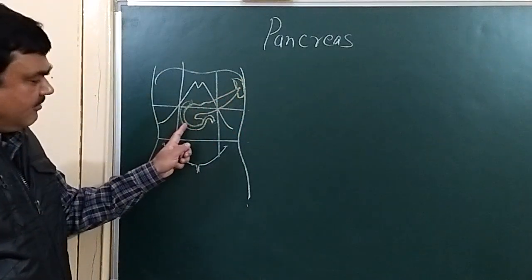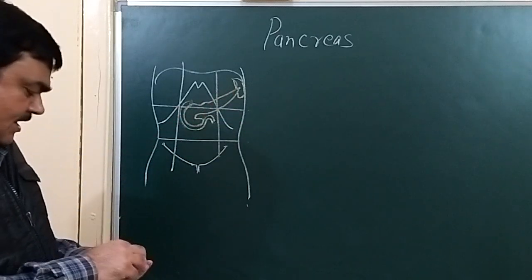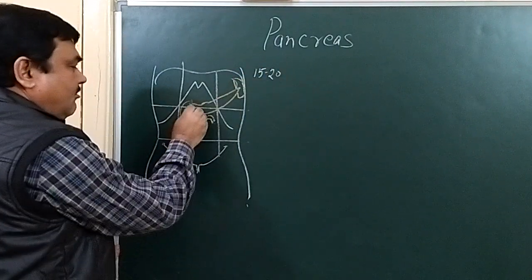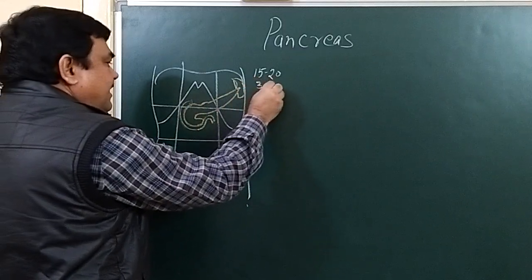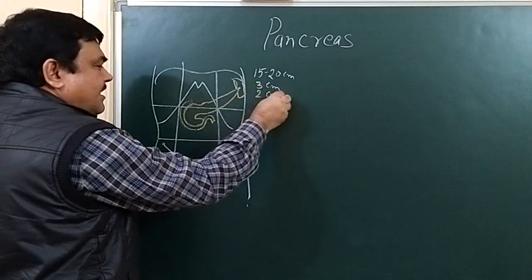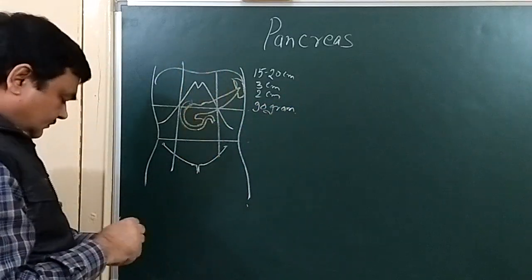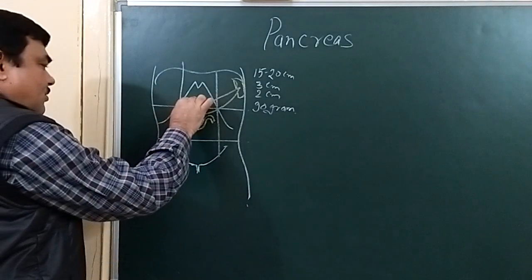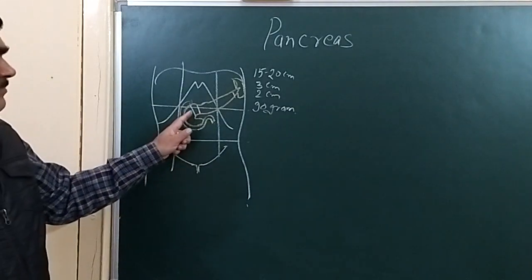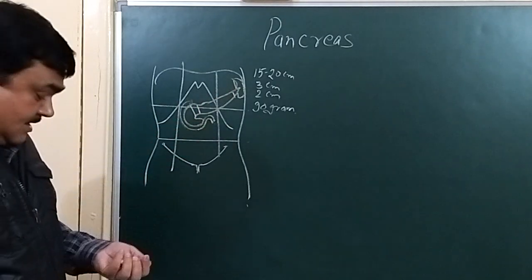The pancreas extends from the concavity of the duodenum to the spleen. Its length is about 15 to 20 centimeters, width is about 3 centimeters, thickness is about 2 centimeters, and its weight is about 90 grams. It is divided into four parts.